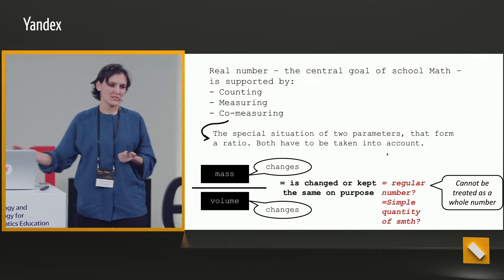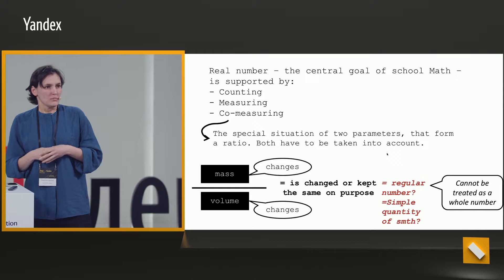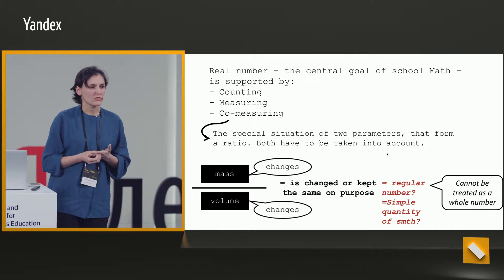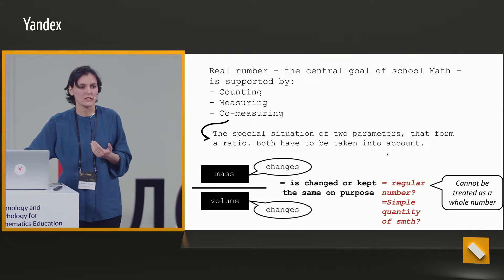We can say that there is the action of counting done in elementary school, and there is measuring. We also propose core measuring. We propose the special situation of two parameters that form a ratio, where both have to be taken into account. Here is a small illustration about the specifics of ratio and proportion.